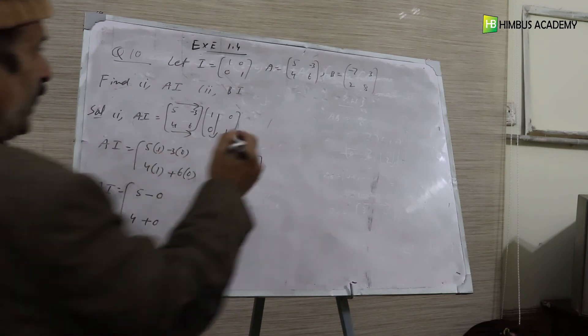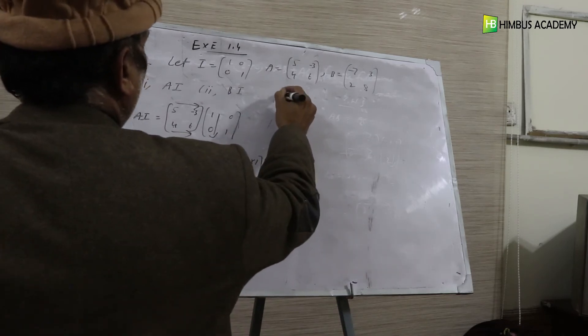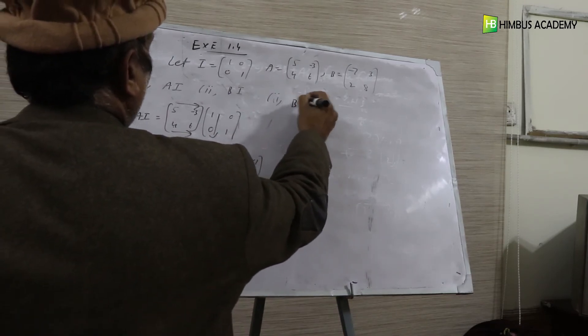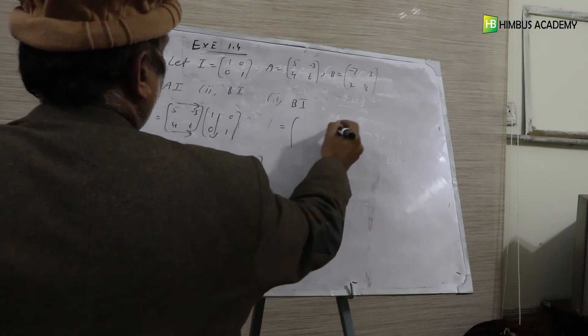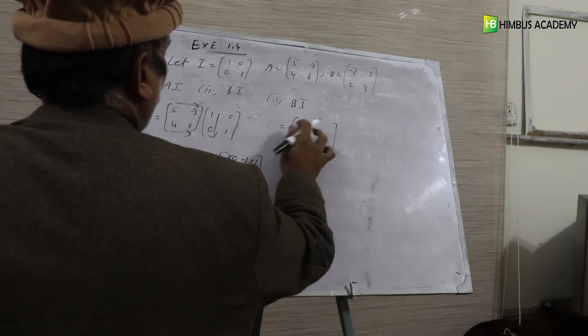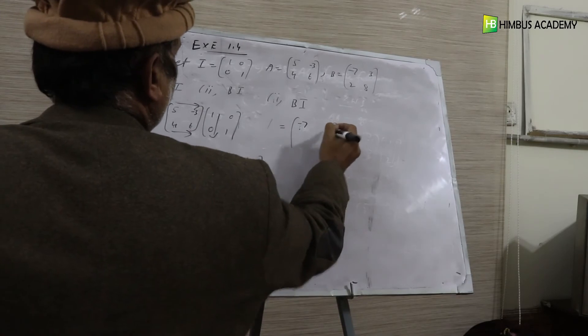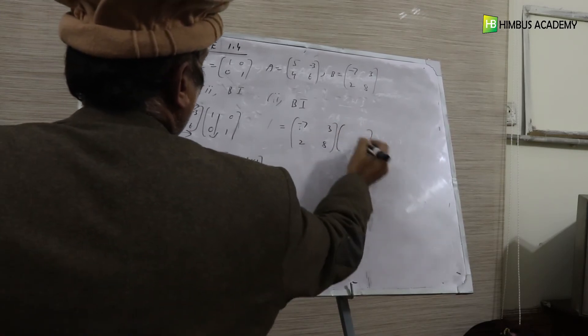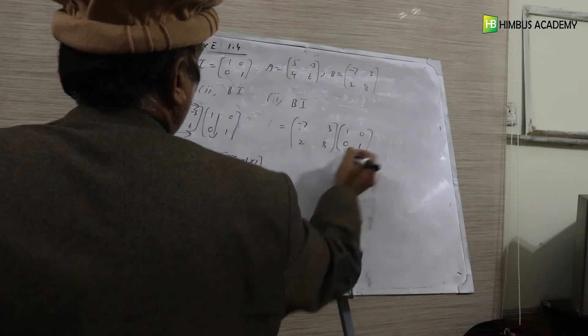Now look at the second part. B, I, meaning matrix B multiplied with matrix I. Minus 7, 3, 2, 8 times 1, 0, 0, 1. B, I.